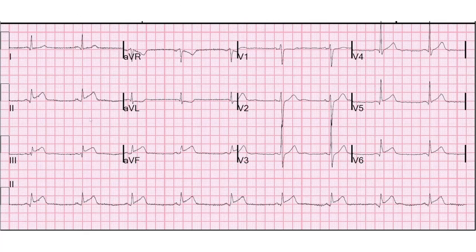Let's have a look at another one. Again, it's an inferior wall MI — and even though they're all inferior STEMIs, no two of these has looked identical, which is the reason I put them in here. Leads 2, 3, AVF have ST-segment elevation. We do have reciprocal depression in AVL, but this patient doesn't have any in lead 1 — and it's not necessary to have it in both 1 and AVL. Is it necessary to have reciprocal depression at all? Absolutely not. Because you can have an inferior wall MI from any of the three main coronary arteries, as they all terminate to some extent in the inferior wall. So you can see an LAD produce an inferior wall MI, and when you see that, you will see zero reciprocal depression.